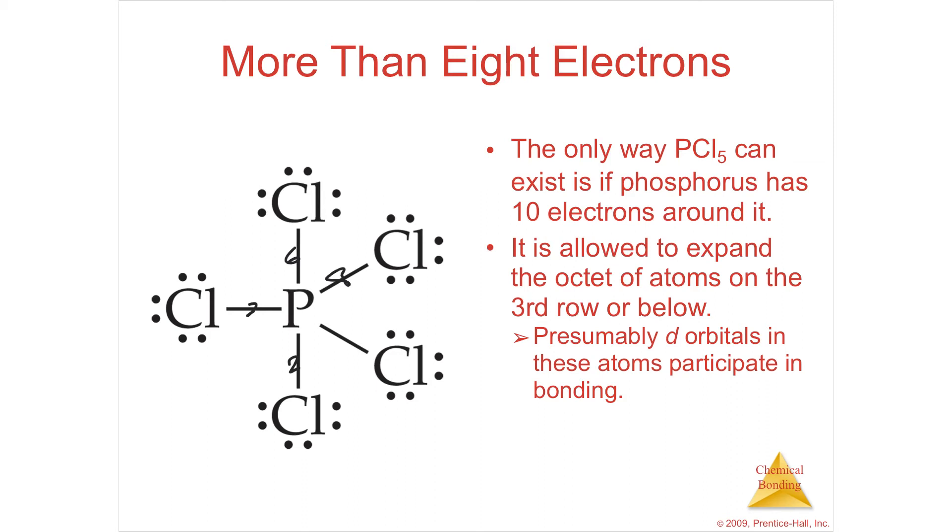But when you think about it, phosphorus is in the third row. And as the third row, imagine concentric circles, you're getting bigger and bigger areas that you can put electrons there. Also in the third row, in third period, you have some unfilled D electrons.